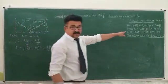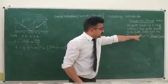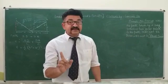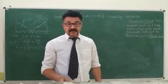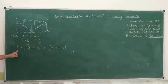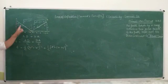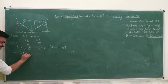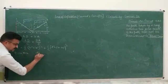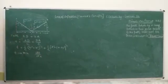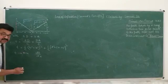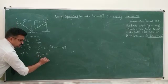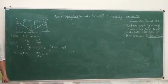Fermat stated that light only travels along the path that takes the least time. If you want to calculate the condition for least time to travel between A and B, we differentiate T with respect to X. For the condition of minimum time, we set dT/dX equal to zero, as you know from your mathematical basics.